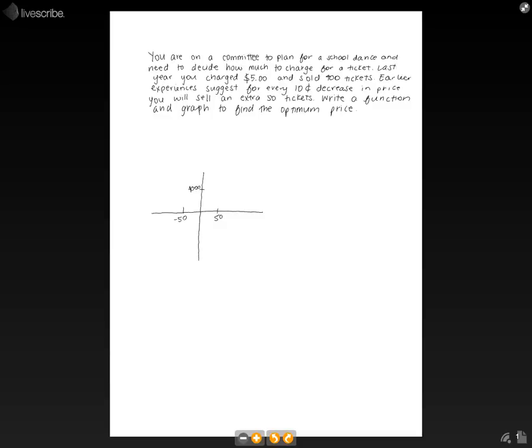Last year, you charged $5 and sold 400 tickets. Early experiences suggest for every 10 cent decrease in price, you will sell an extra 50 tickets. Write a function and graph to find the optimum price.